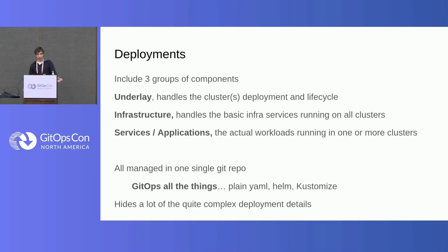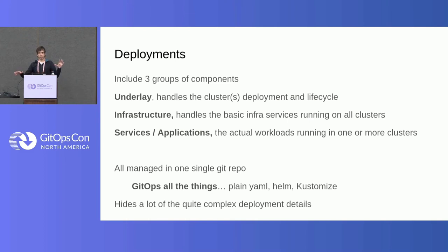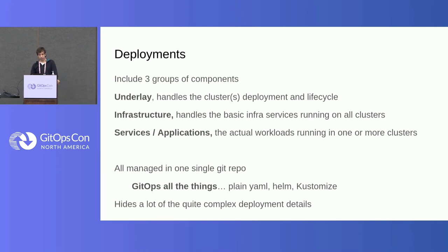We do this by having a single Git repository where we have all the configuration for the clusters, all the definitions of the base services, and the association of services and applications with each cluster. All the complexity of a very large deployment — with, say, AWS, Azure, and Google Cloud in multiple regions — basically you are looking at a single repository to manage all of this.